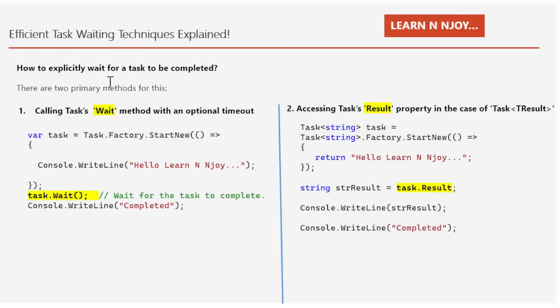Let's start by understanding how to explicitly wait for a task to complete. There are two primary methods for this: method number one — calling the Task.Wait method with an optional timeout; and method number two — accessing the Task.Result property in case of Task<T>. Let's understand these with the help of an example. Here, Task is equal to Task.Factory.StartNew — this line creates a new task using the StartNew method of TaskFactory.